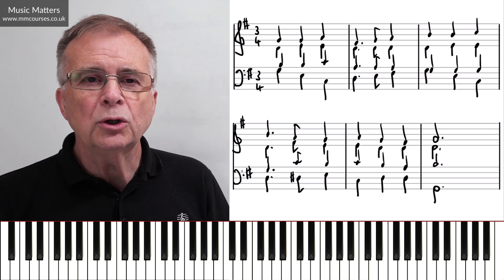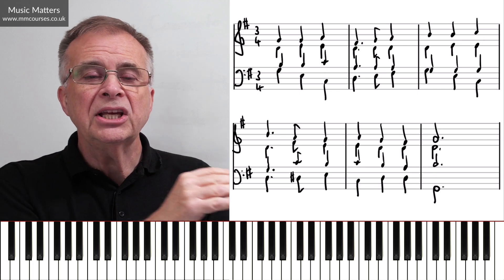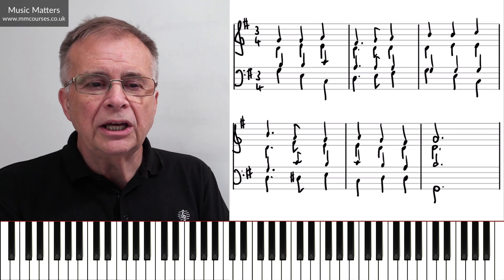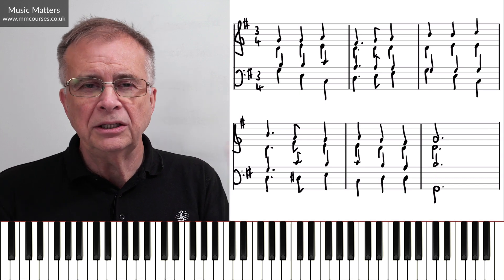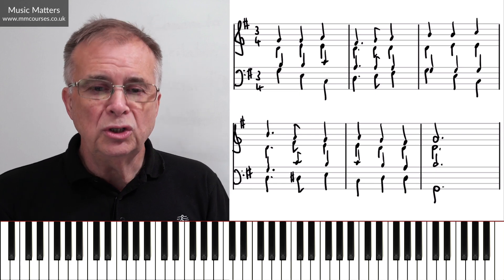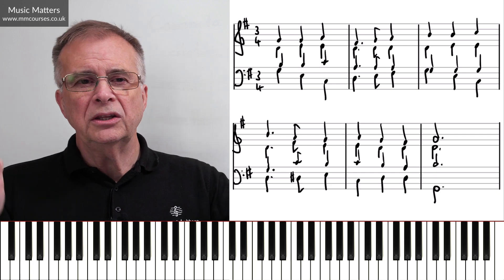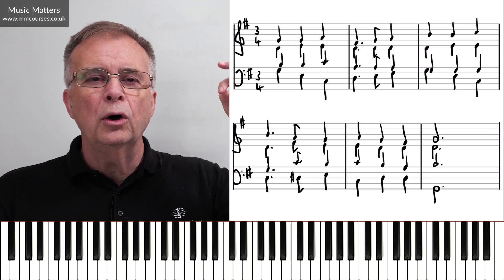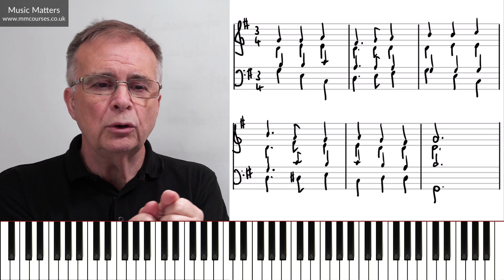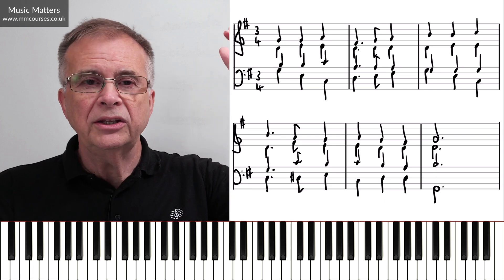Or I can use these things called inessential notes — passing notes, or passing tones, depending on how you've learnt those — auxiliary notes, or neighbour tones, depending on how you've learnt those. And they're really the essentials in things you can use to get a bass line moving. So it doesn't take too much to think: am I moving to another note of the same chord, or am I using one of those two devices? If it's a passing note or a passing tone, it's got to move by step between two other notes.